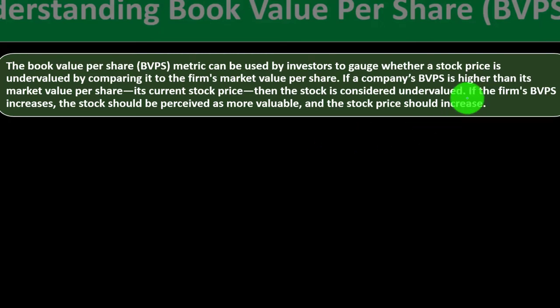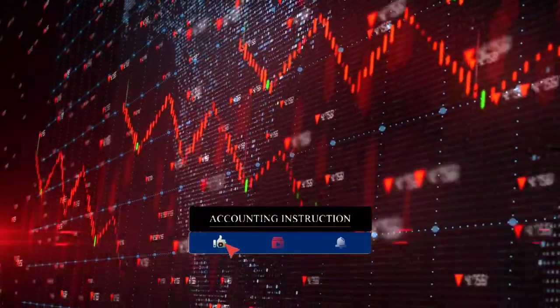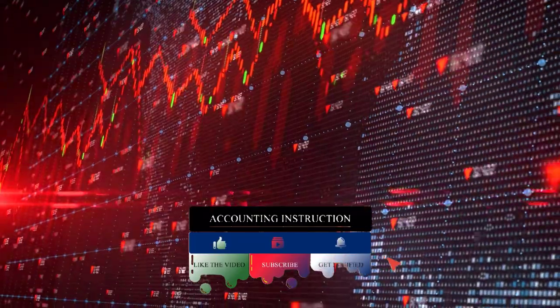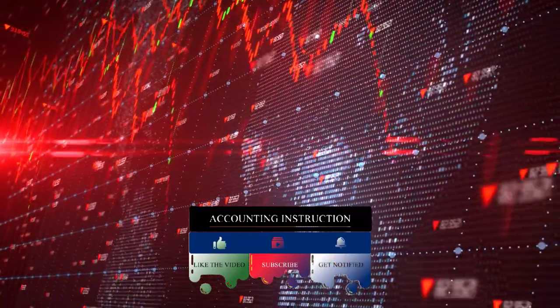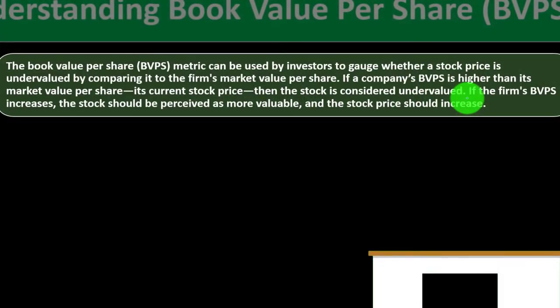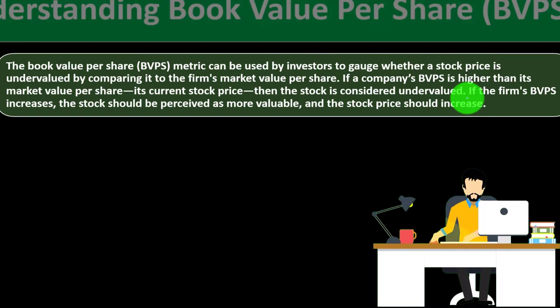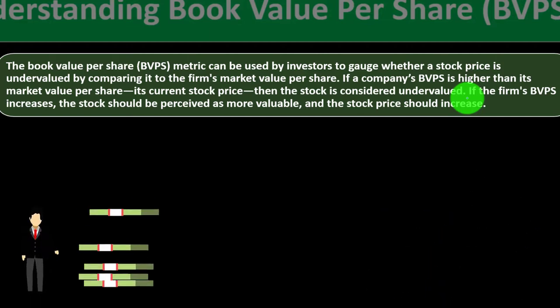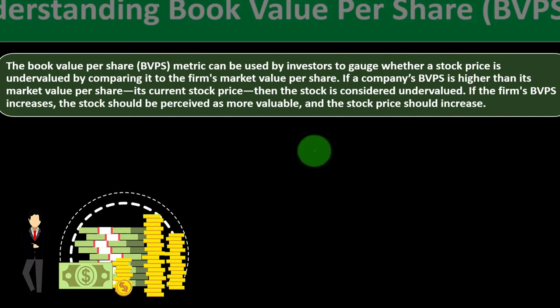You would think the stock would be trading above the book value, because the book value reflects assets minus liabilities. If it's selling just at book value, it's basically priced at what the company actually has on the books. You would expect it to be above that because of earnings potential — the management and company should be adding goodwill and value, using those net assets to generate revenue. If the firm's BVPS increases, the stock should be perceived as more valuable and the stock price should increase.